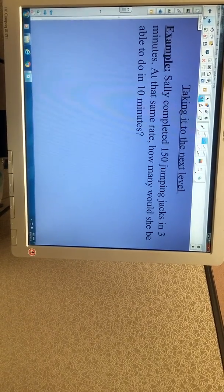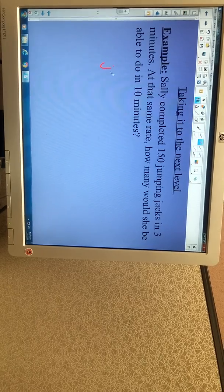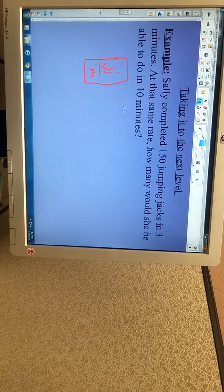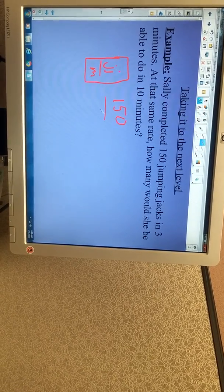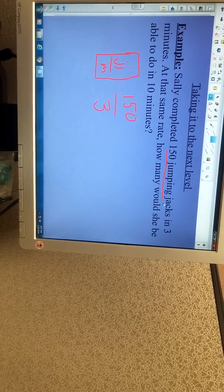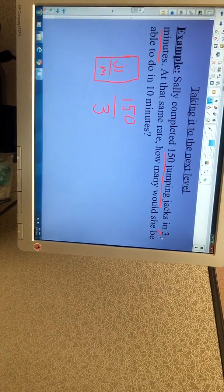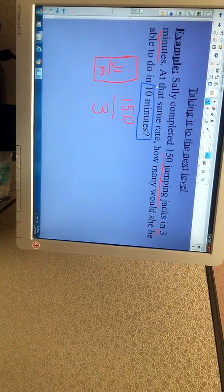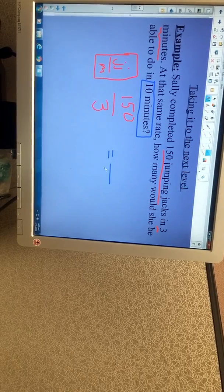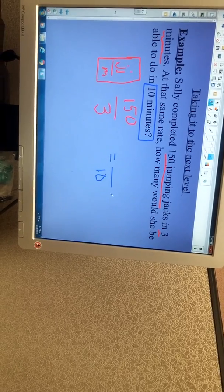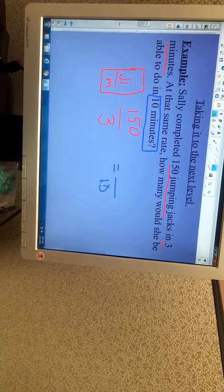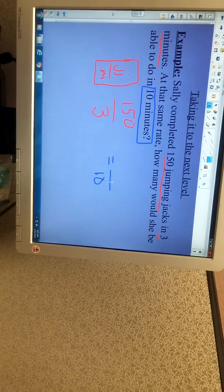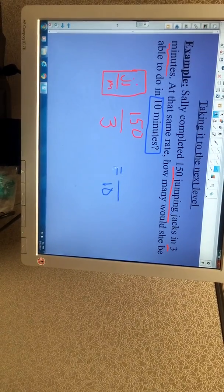So Sally completed 150 jumping jacks in 3 minutes. So what we're comparing here is jumping jacks to minutes. So let's get the information we know, 150 of them. And it took her 3 minutes to do those jumping jacks. At that same rate, how many would she be able to do in 10 minutes? So this is interesting here, because if we set this up, there is no whole number that we can multiply 3 by to give us 10. 3 times 3 is 9, 3 times 4 is 12. So this isn't going to work.